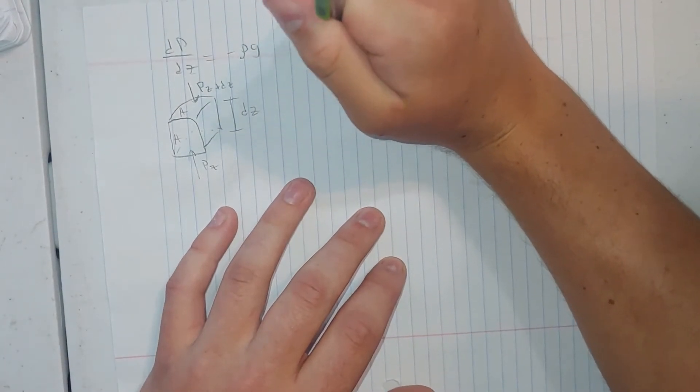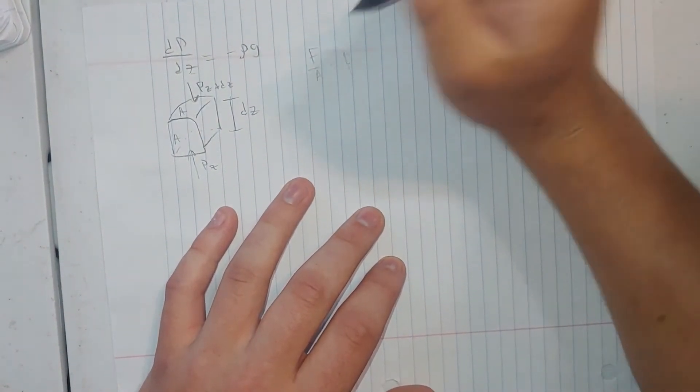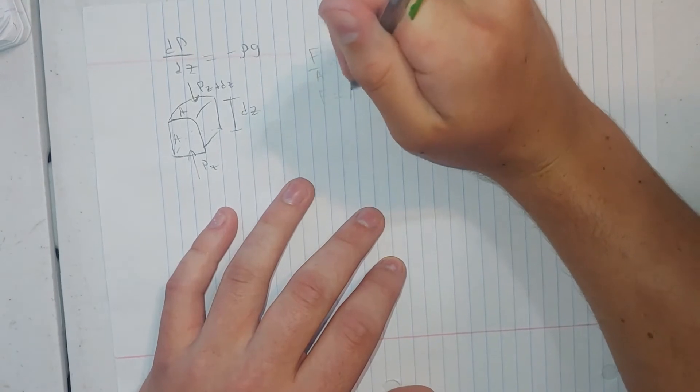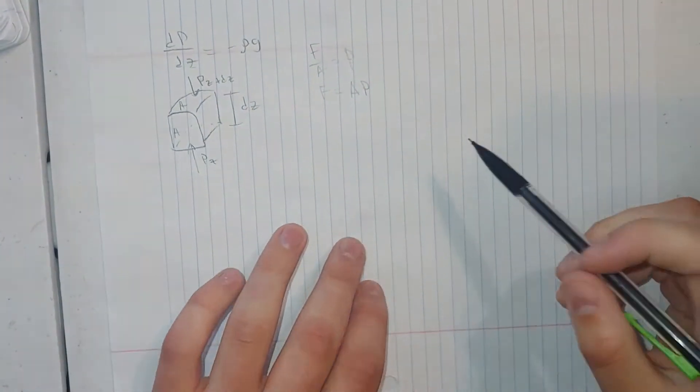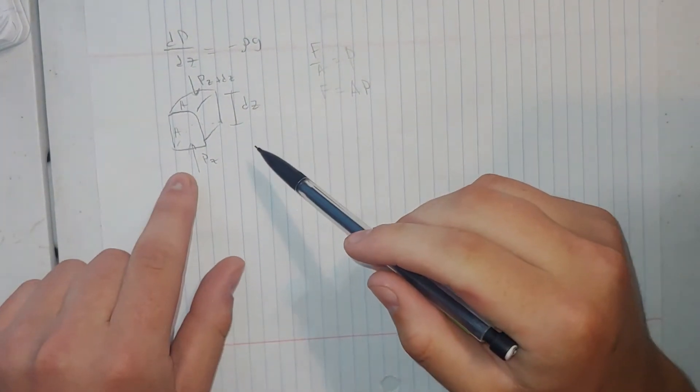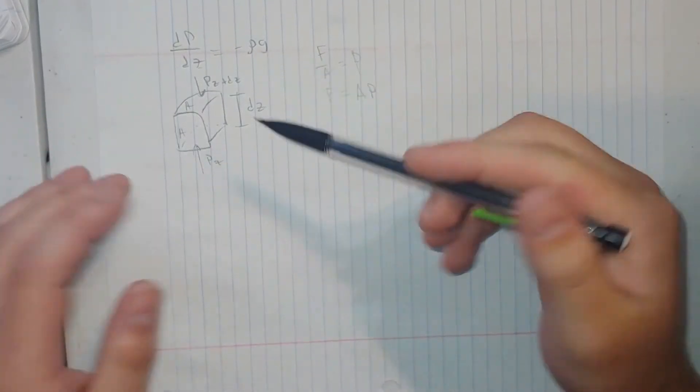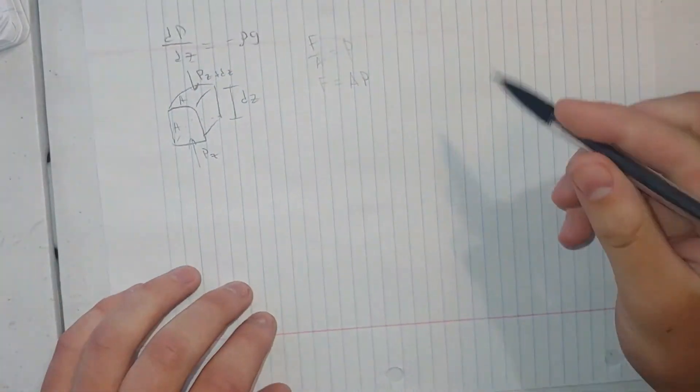So we know that force over area equals pressure. In other words, we can write force equals area times pressure. And we know that for this box to not be accelerating at all, the forces from the top and the bottom must be the same.